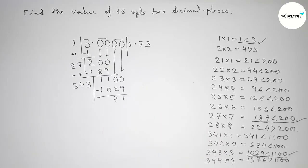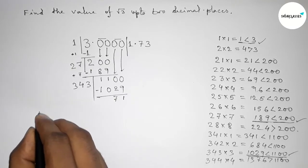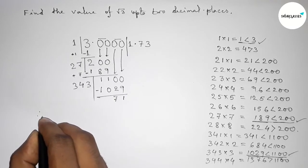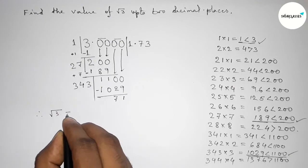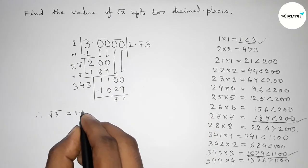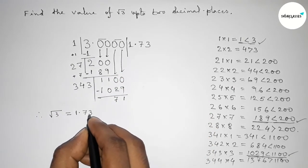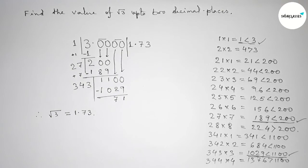Subtracting 1029 from 1100 gives 71. Therefore, the value of root 3 up to 2 decimal places is 1.73. That's all — thanks for watching. If this video is helpful to you, please share it with your friends.